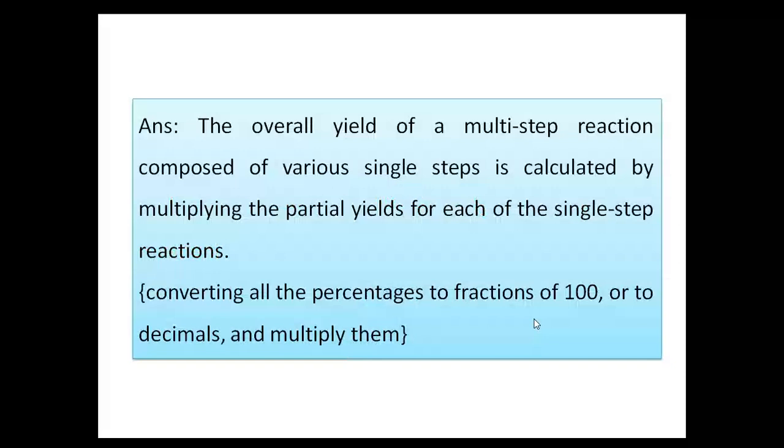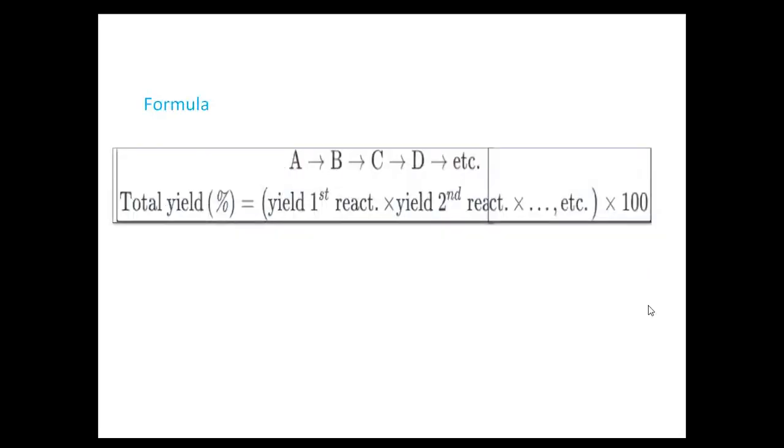The overall yield of a multi-step reaction composed of various single steps is calculated by multiplying the partial yields for each of the single-step reactions, converting all the percentages to fractions of 100 or to decimals, and multiplying them.